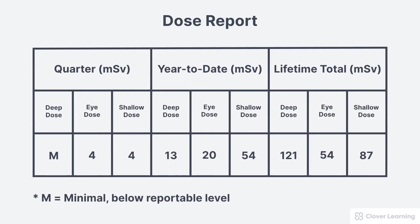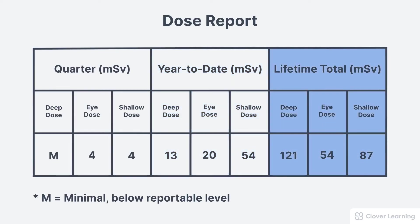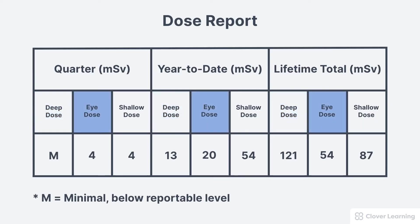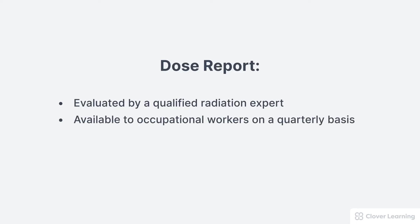Dosimeter reports look more complicated than they actually are. They usually include the dose report for the past quarter, the year-to-date dose report, and your lifetime total dose. They also break the dose into smaller categories based on the occupational limits: the deep dose, which corresponds to the whole body dose; the eye dose, which tracks dose to the lens of the eye; and the shallow dose, which tracks the dose to the skin. The law requires that your dose be evaluated by a qualified expert such as a health physicist or medical physicist, and dose reports must be made available to occupational workers on a quarterly basis.